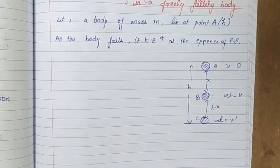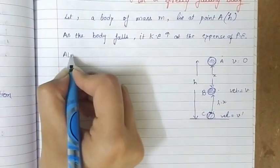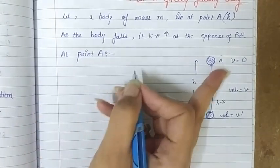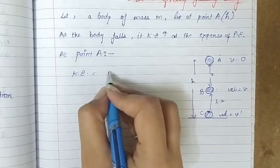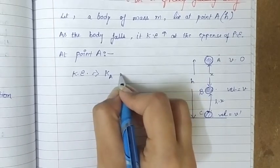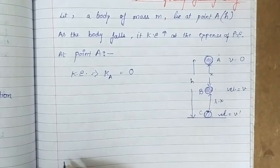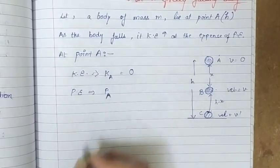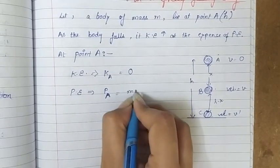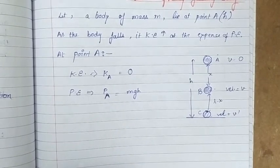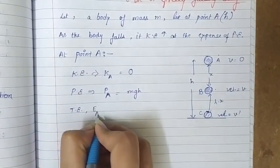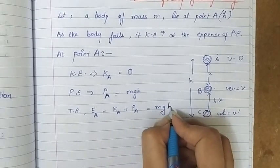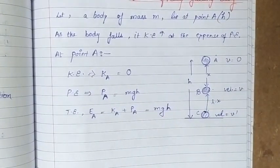First we are starting from point A. At point A, the kinetic energy of the body — since the body is at rest and there is no velocity — kinetic energy at point A, KA, is zero. Potential energy at point A, PA, is mgh since the height is h. That means the total energy at point A, EA, is equal to KA plus PA, which equals mgh. So this is the value of total energy of the object at height h or at point A.